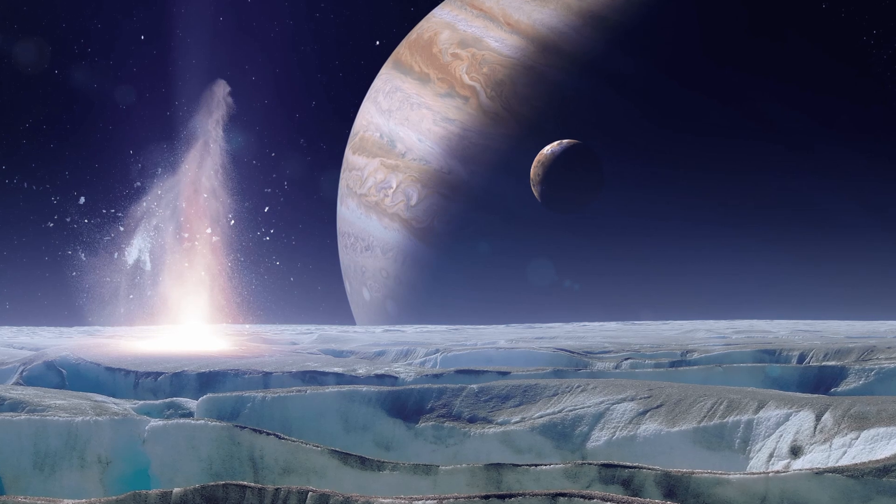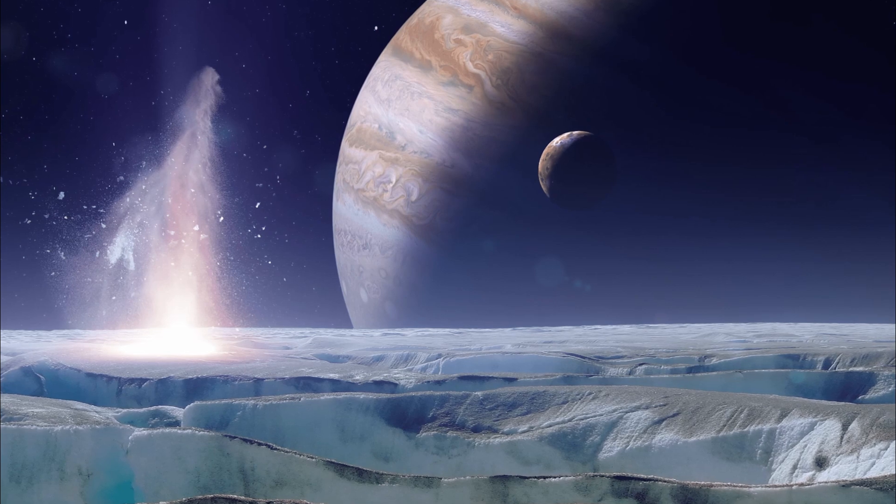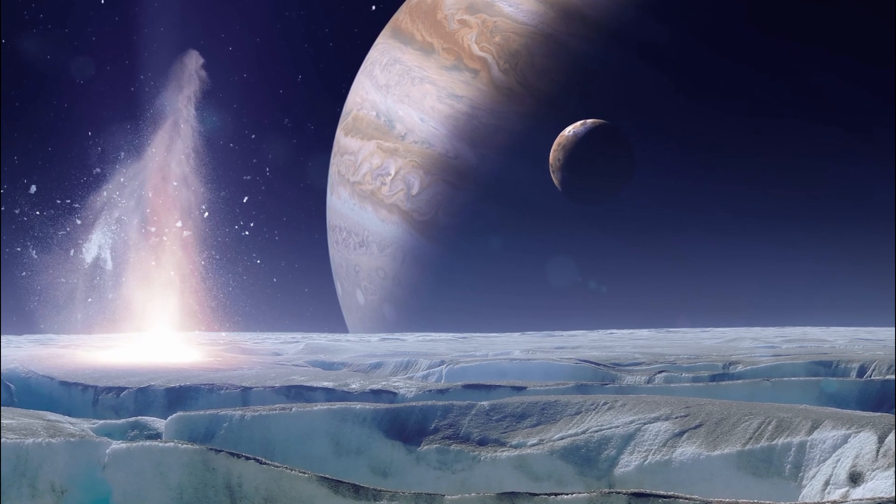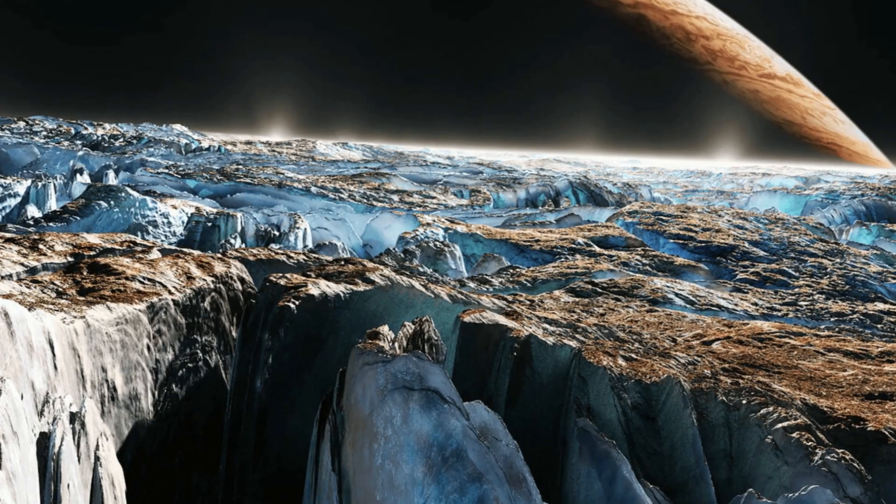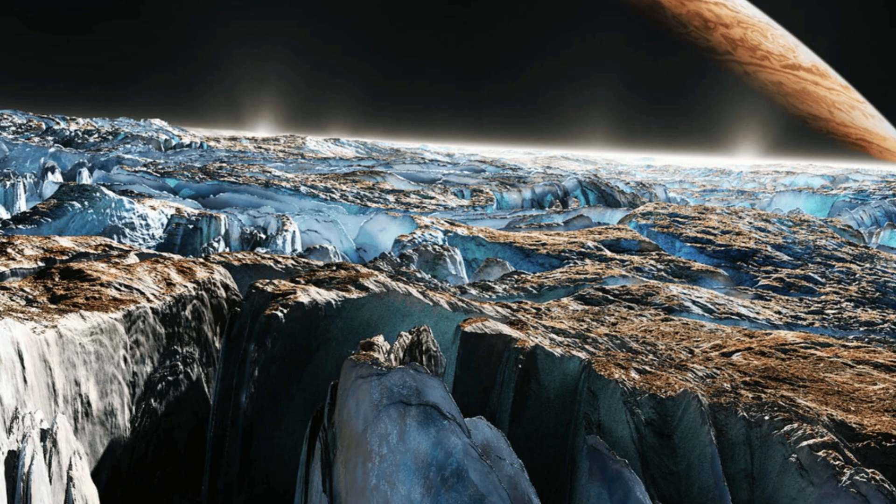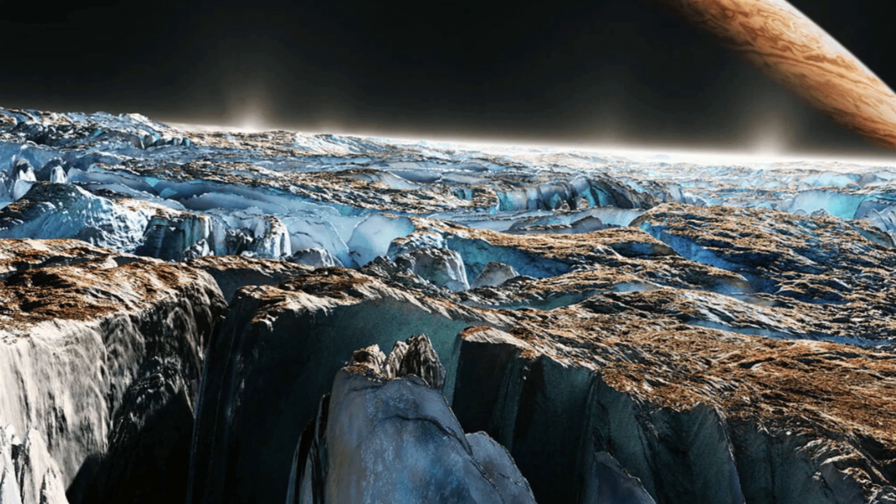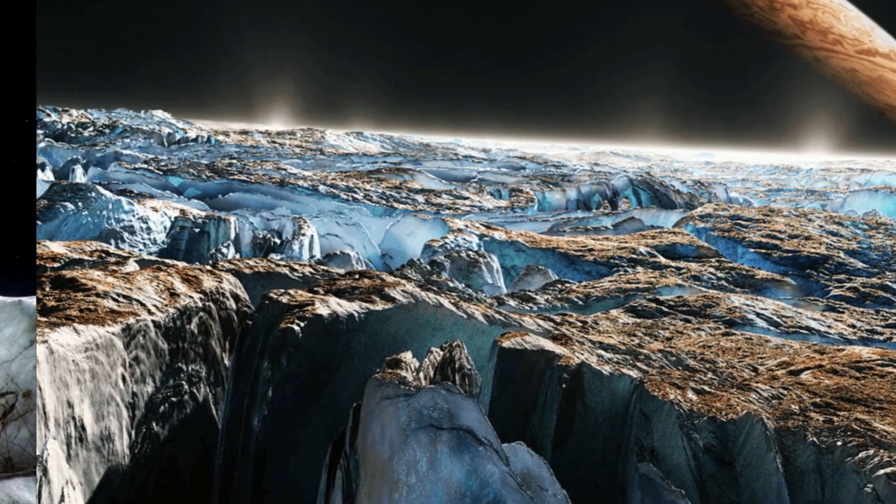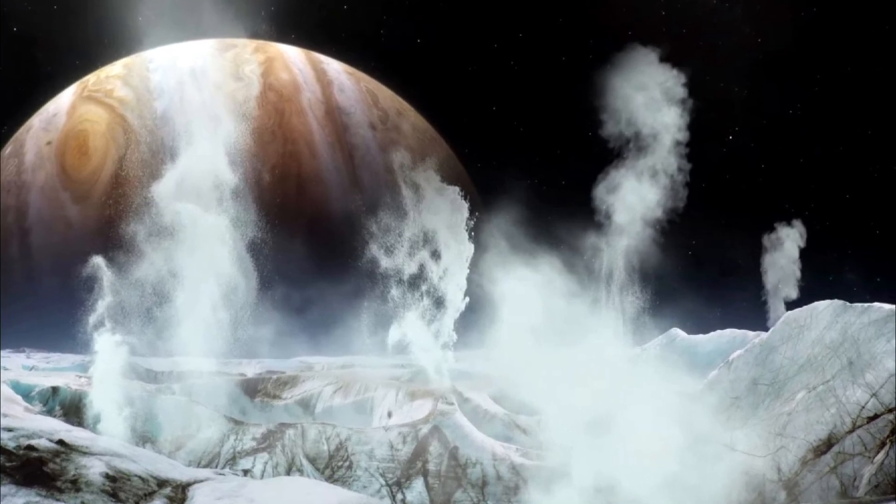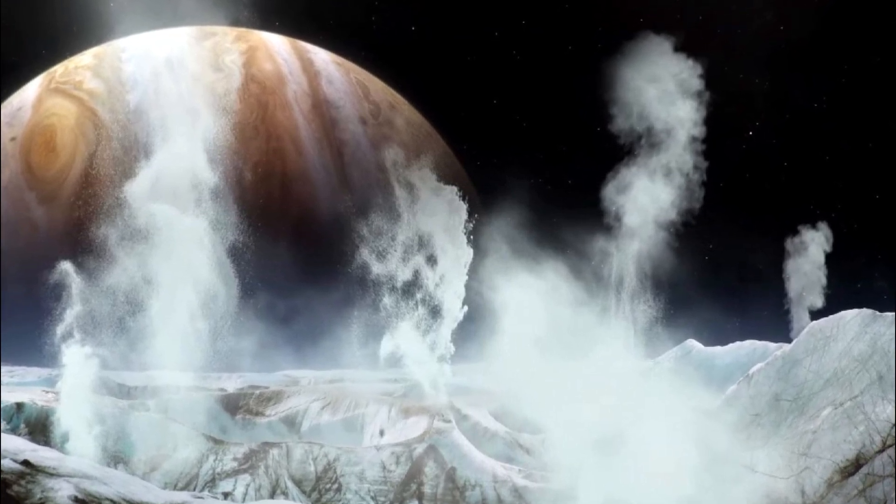Europa is a captivating moon because it has a subsurface ocean that could potentially support life. However, the existence of carbon in Europa's ocean was previously uncertain. Recent JWST observations have proven the presence of carbon on Europa's surface in the form of carbon dioxide deposits. These deposits are likely to have originated from Europa's ocean rather than being delivered by meteorites. Additionally, JWST did not confirm previous evidence of plumes of water vapor escaping cracks in Europa's surface, suggesting that plume activity may be intermittent.